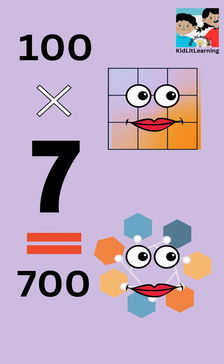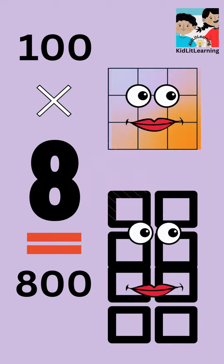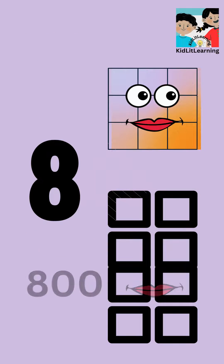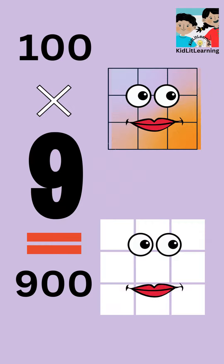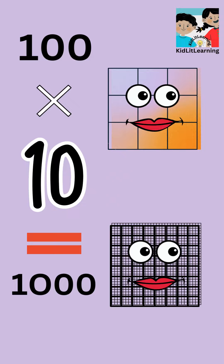100 times 7 is equals 700. 100 times 8 is equals 800. 100 times 9 is equals 900. 100 times 10 is equals 1000.